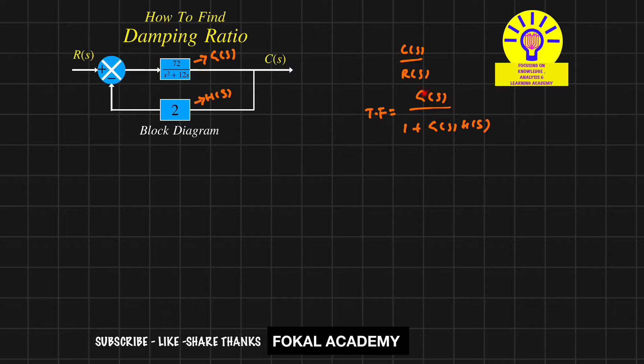Now substitute the forward and feedback gains into this formula. We get 72/(s² + 2s) divided by 1 plus 72/(s² + 2s) times 2, where the feedback gain is 2.